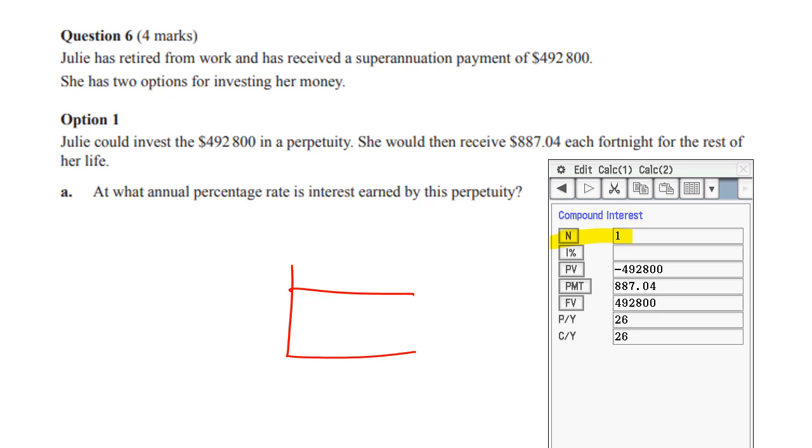But just stick the values in your calculator. Present value is minus 492,800 because you're giving the money to the bank. The payments are positive because the bank is paying you.